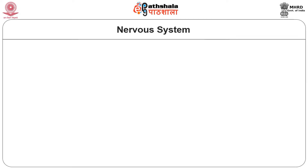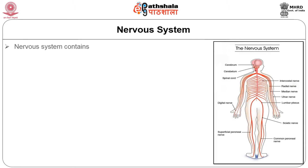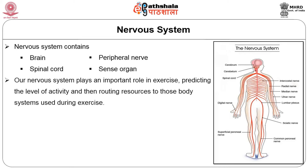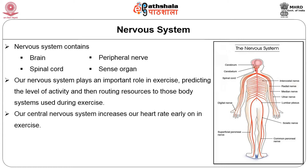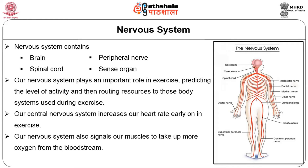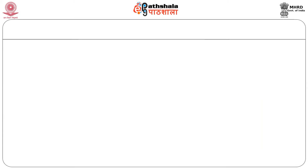Let's move on to the nervous system, which is another major component that affects exercise. Our nervous system has the brain, spinal cord, peripheral nerves, and sense organs and it runs across the body. The nervous system plays an important role in exercise by predicting the level of activity and routing resources to the body systems used during exercise, maneuvered through the sympathetic and parasympathetic nervous system. The central nervous system increases heart rate early in exercise, helping provide blood supply to working muscles and signaling muscles to take up more oxygen.